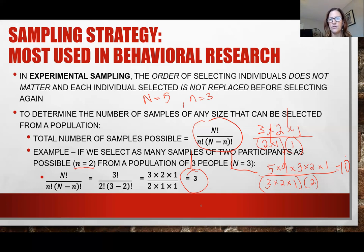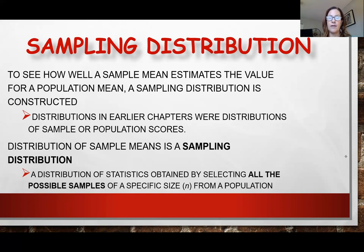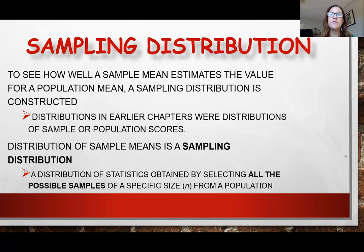Now we can think about how sampling distributions are constructed. The sample mean is basically an estimate of the population mean. In previous chapters, our distributions were of raw scores — either population or sample scores. But a distribution of sample means, which is a sampling distribution, is a distribution of all possible samples of a specific size from a population, taking the mean of each.